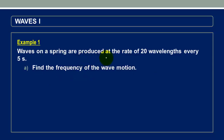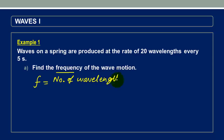We are given that the spring produces 20 wavelengths every 5 seconds. In order to find the frequency, we need to remember that frequency is the number of vibrations, oscillations, or wavelengths made per unit time. We can write it as the number of wavelengths because a complete wavelength is a cycle. So frequency is the number of wavelengths or oscillations divided by the time taken to make those oscillations. Remember that a complete wavelength is an oscillation.